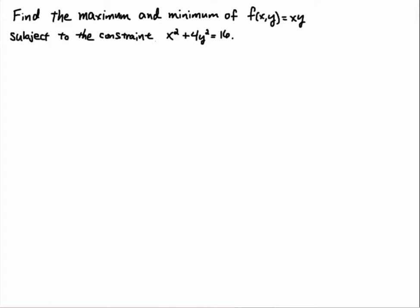Hello students. In this video, we're going to find the max and min of this function, f(x,y) = x times y, subject to this constraint: x squared plus 4y squared equals 16. So we're going to locate the max and min on this constraint. This surface will go off to plus or minus infinity, but once we constrain it to this ellipse, we'll be able to locate the max and min on this ellipse.